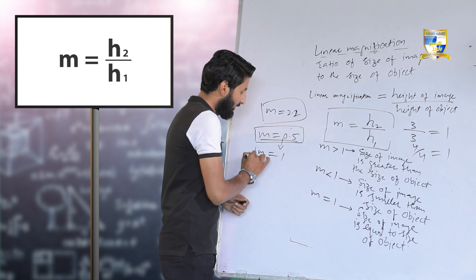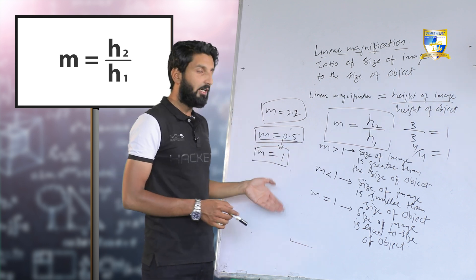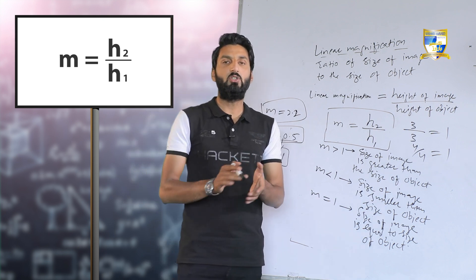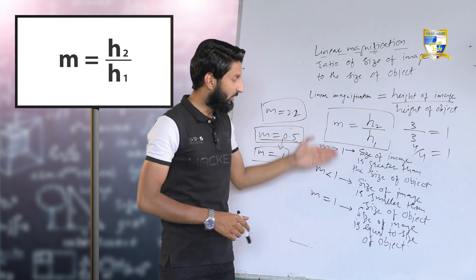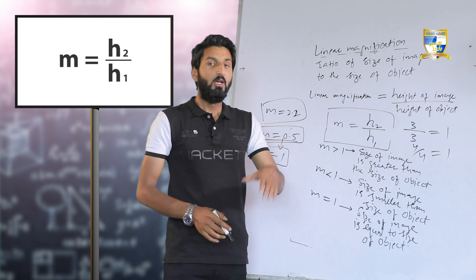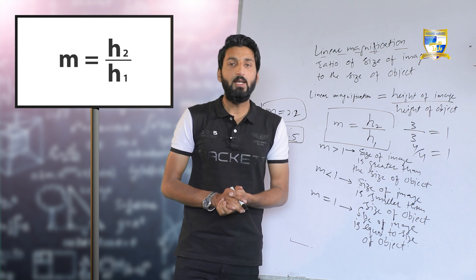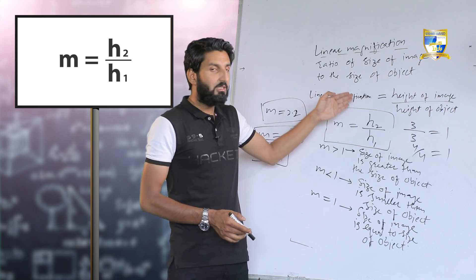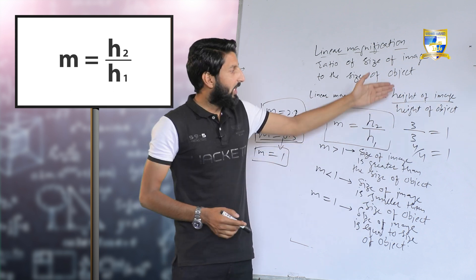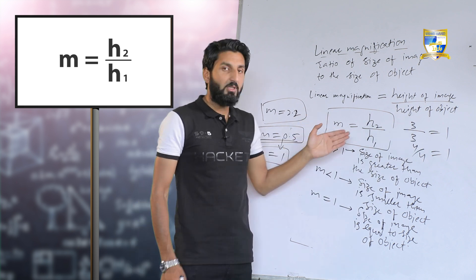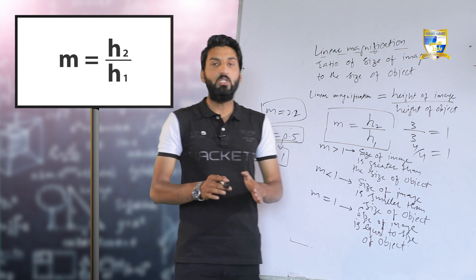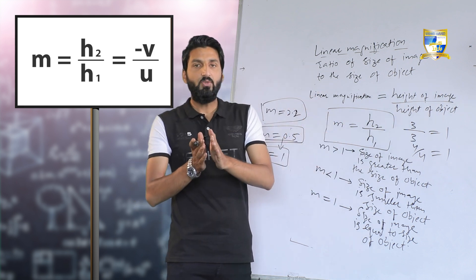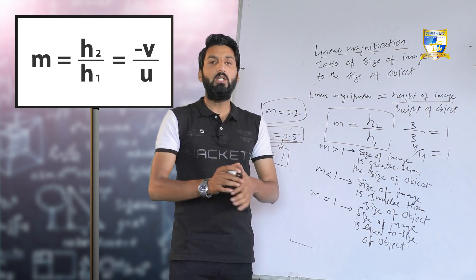So linear magnification gives information about the size of the image — whether it is smaller, greater, or equal to the size of the object. However, we still need to calculate the actual size of the image. For that, we look at the relation between linear magnification and the mirror formula.